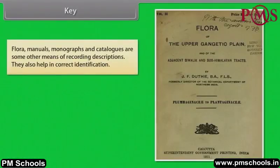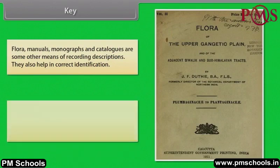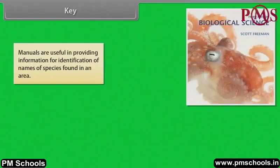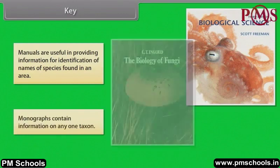Flora, manuals, monographs and catalogues are some other means of recording descriptions and also help in correct identification. Flora contains the actual account of habitat and distribution of plants of a given area, providing an index to the plant species found in a particular area. Manuals are useful in providing information for identification of names of species found in an area. Monographs contain information on any one taxon.